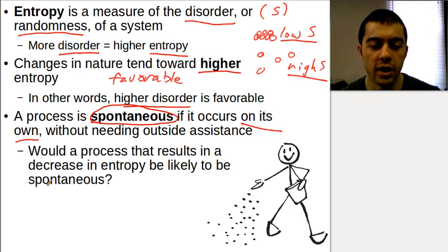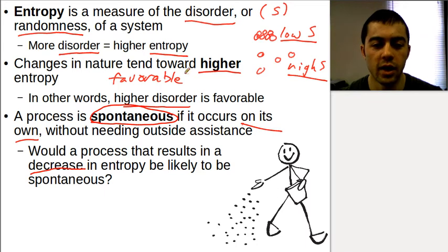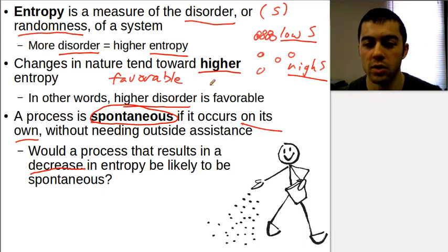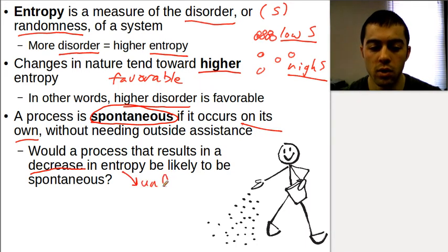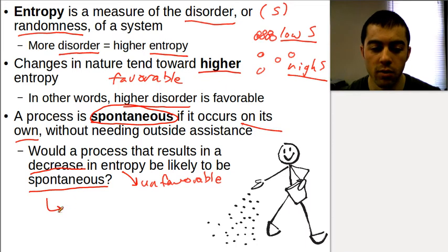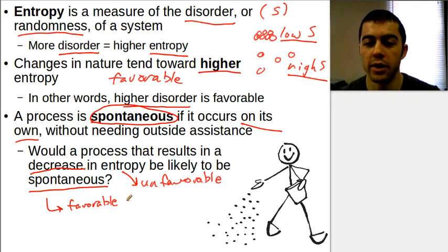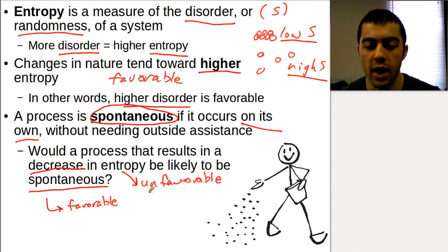Would a process that results in a decrease in entropy be likely to be spontaneous? Well, higher entropy is favorable, higher disorder is favorable, and nature tends towards higher entropy. So a decrease in entropy would be unfavorable. If it's unfavorable, it would not likely be spontaneous. A spontaneous process is something that is favorable and can happen on its own without outside assistance. A decrease in entropy would be unfavorable — unlikely to occur.